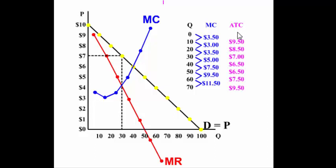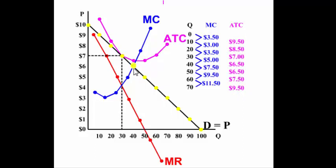Let's see if the monopolist is allocatively inefficient when breaking even. We'll put in an average total cost curve where the monopolist is breaking even. Allocative efficiency takes place where P equals MC, which equals D, which equals MR — where a perfectly competitive firm would charge and produce — but the monopolist is still inefficient.